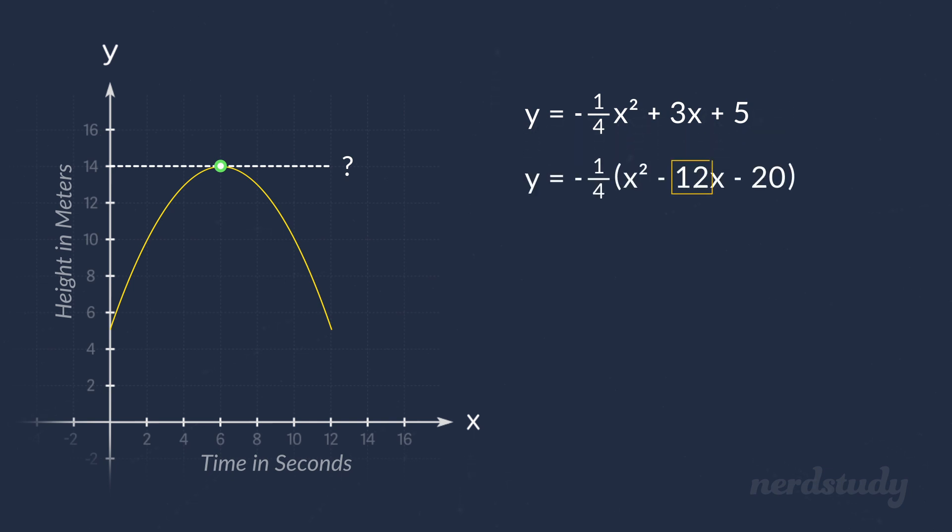We know that we can take this number here that's being multiplied by the x and then simply divide it by 2 to get negative 6, and then square it to get 36, which is the number that we use to add and subtract from the equation to set ourselves up for the perfect square trinomial. So we add this 36 and subtract it all within the brackets. Then we factor this part to get x minus 6 squared. And if we simplify this part, we get minus 56.